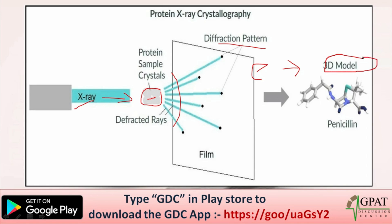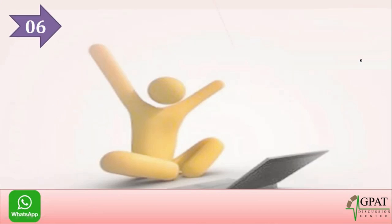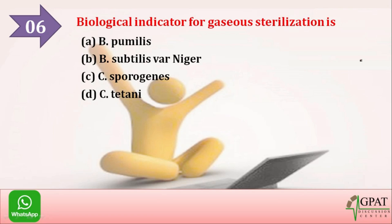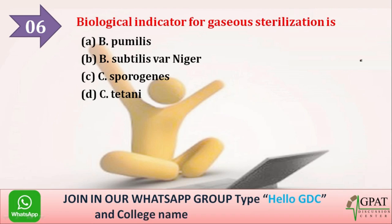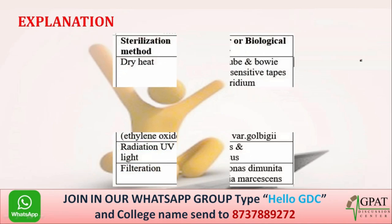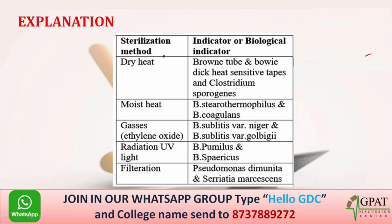The next question: the biological indicator for gaseous sterilization is — option A: Bacillus pumilus, option B: Bacillus subtilis variety niger, option C: C. sporogenes, option D: C. tetani. The correct answer is Bacillus subtilis variety niger.